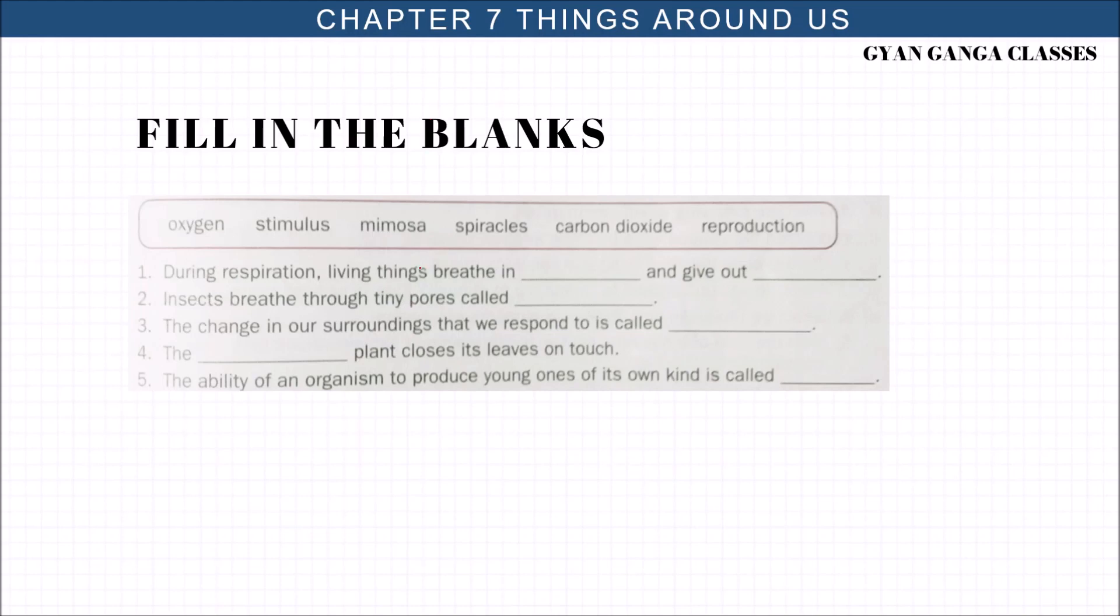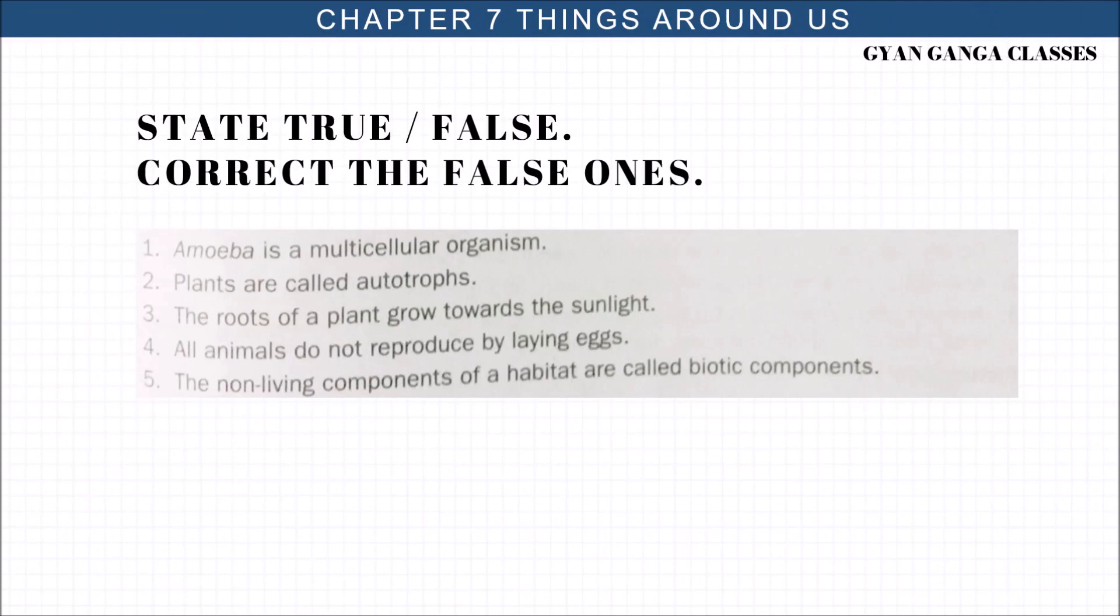Now fill in the blanks. During respiration, living things breathe in oxygen and give out carbon dioxide. Insects breathe oxygen through tiny pores called spiracles. The change in our surroundings that we respond to is called stimulus. The mimosa plant closes its leaf on touch. The ability of an organism to produce young ones of its own kind is called reproduction.